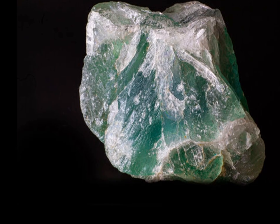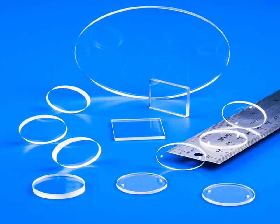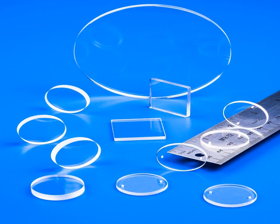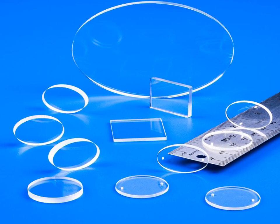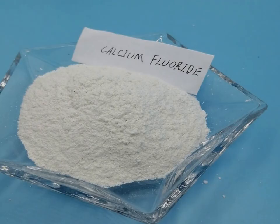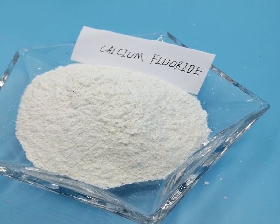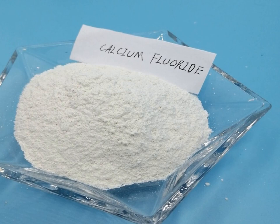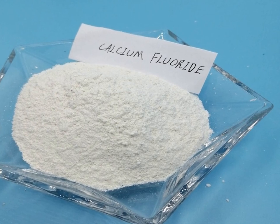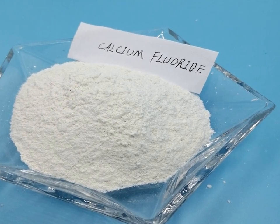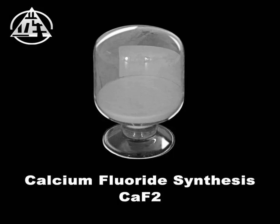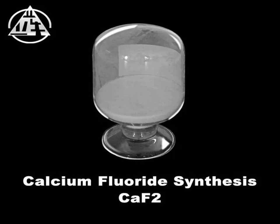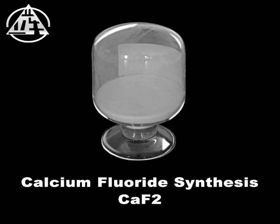Calcium fluoride is distinguished by its low refractive index, making it transparent over a broad range of wavelengths, from ultraviolet (UV) to infrared (IR) light. This feature, alongside its low dispersion, makes it an ideal material for optical components.